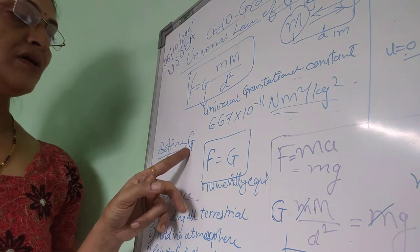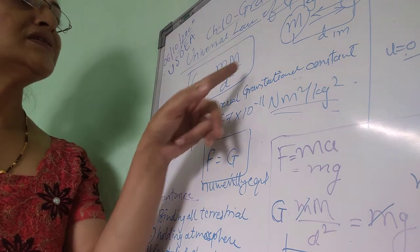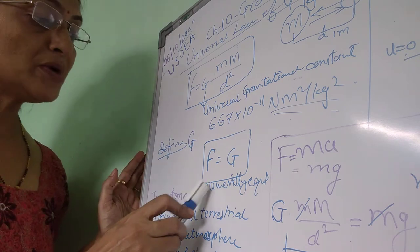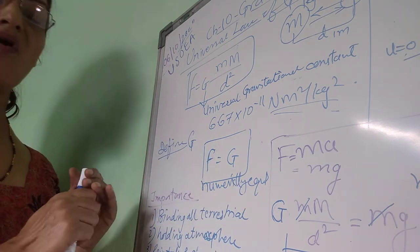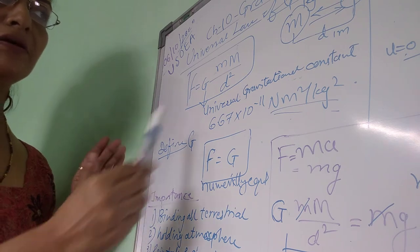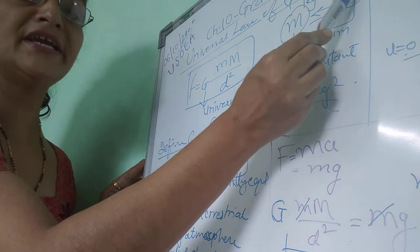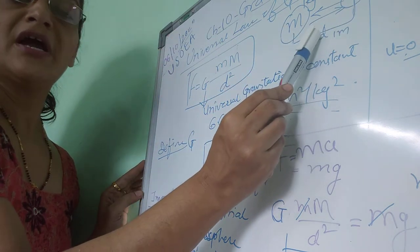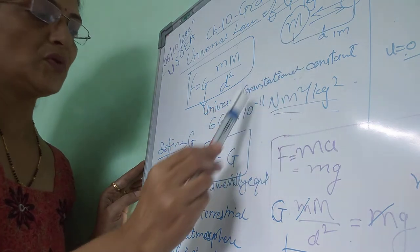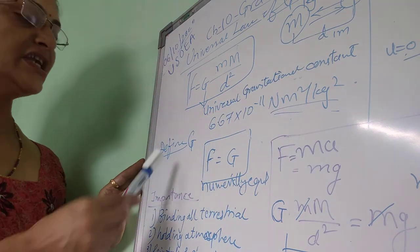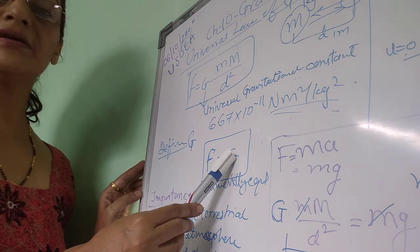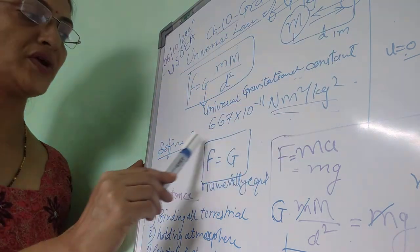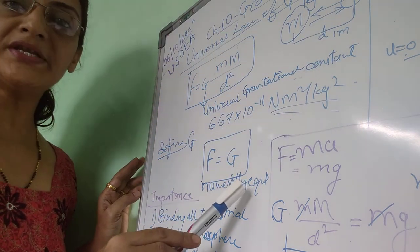G is the universal gravitational constant whose value is numerically equal to the force of attraction between two masses of 1 kg each, if they are separated from each other at a distance of 1 meter. That is the definition numerically equal to the gravitational constant G. If the definition is asked, you have to find it all and write it down like this.